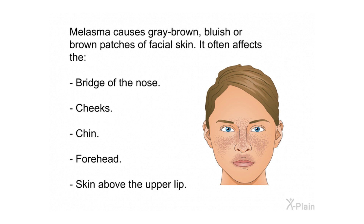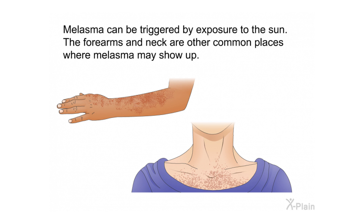Melasma causes gray-brown, bluish, or brown patches of facial skin. It often affects the bridge of the nose, cheeks, chin, forehead, and skin above the upper lip. Melasma can also be triggered by exposure to the sun, and the forearms and neck are other common places where it may show up.